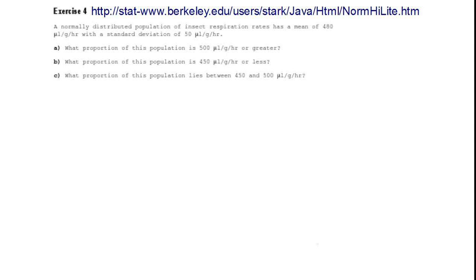In exercise 4, in tutorial 6, we need to use the normal distribution to work out what proportion of insect respiration rates are greater than 500, less than 450, or between those two values.